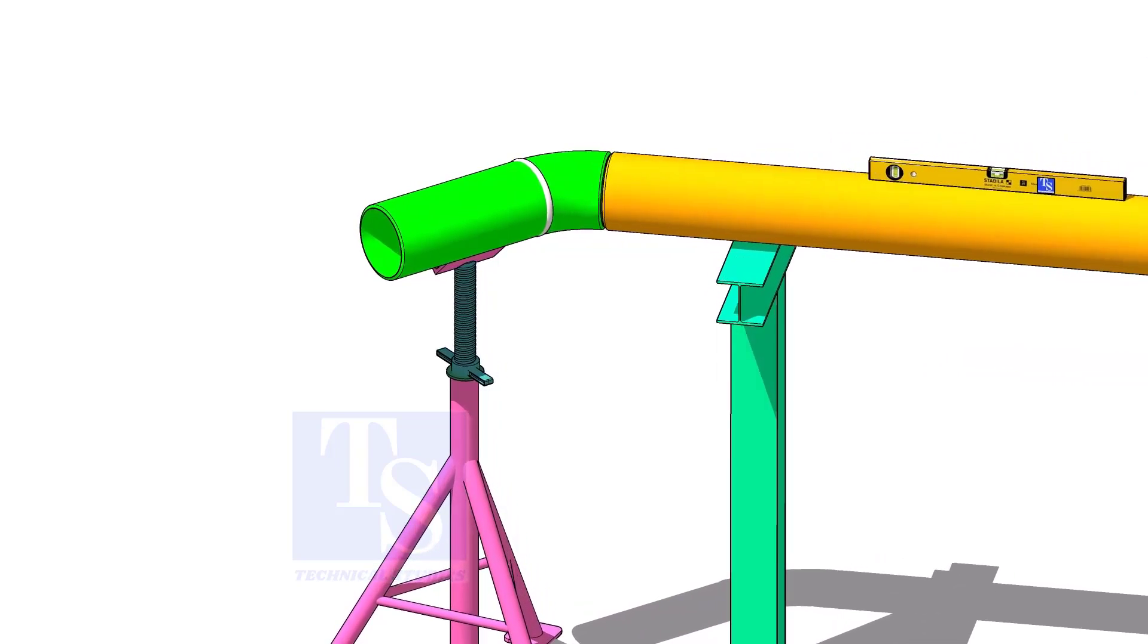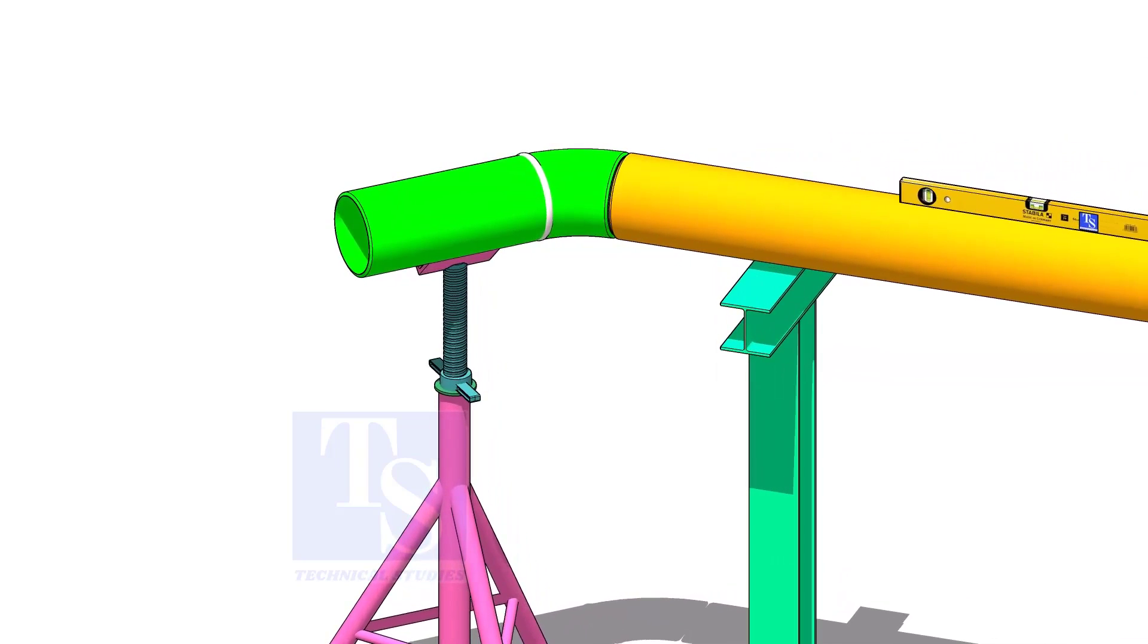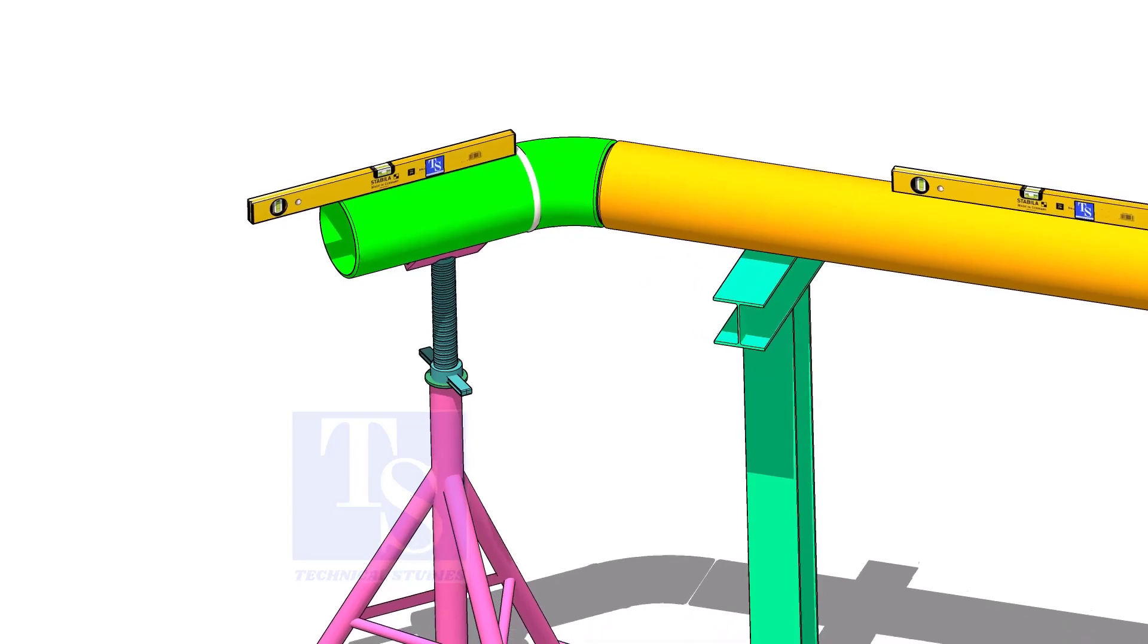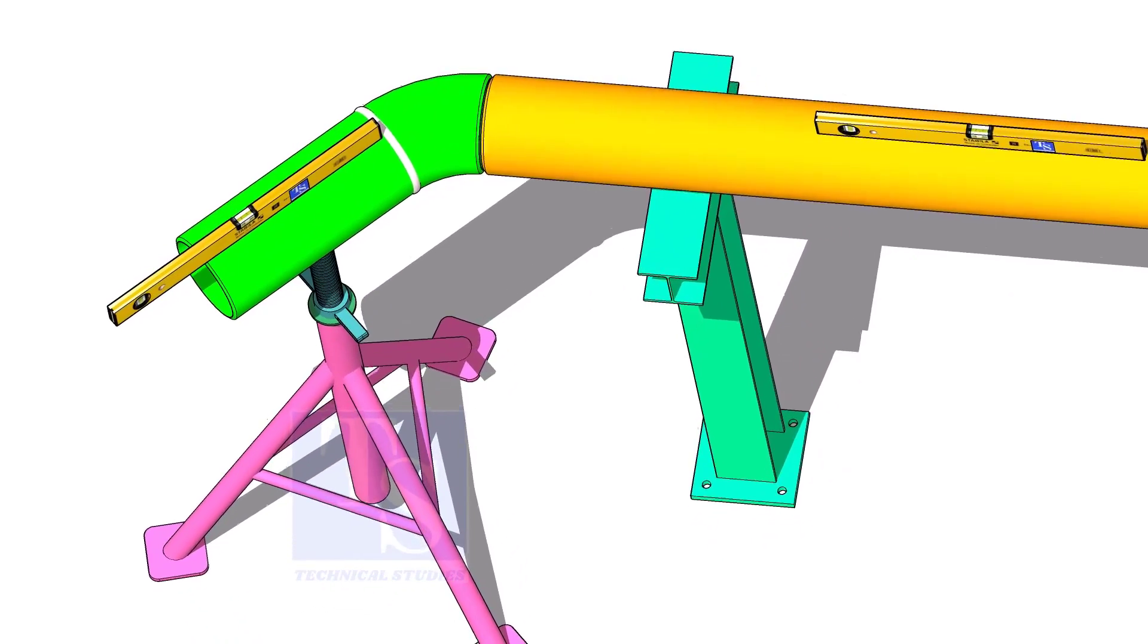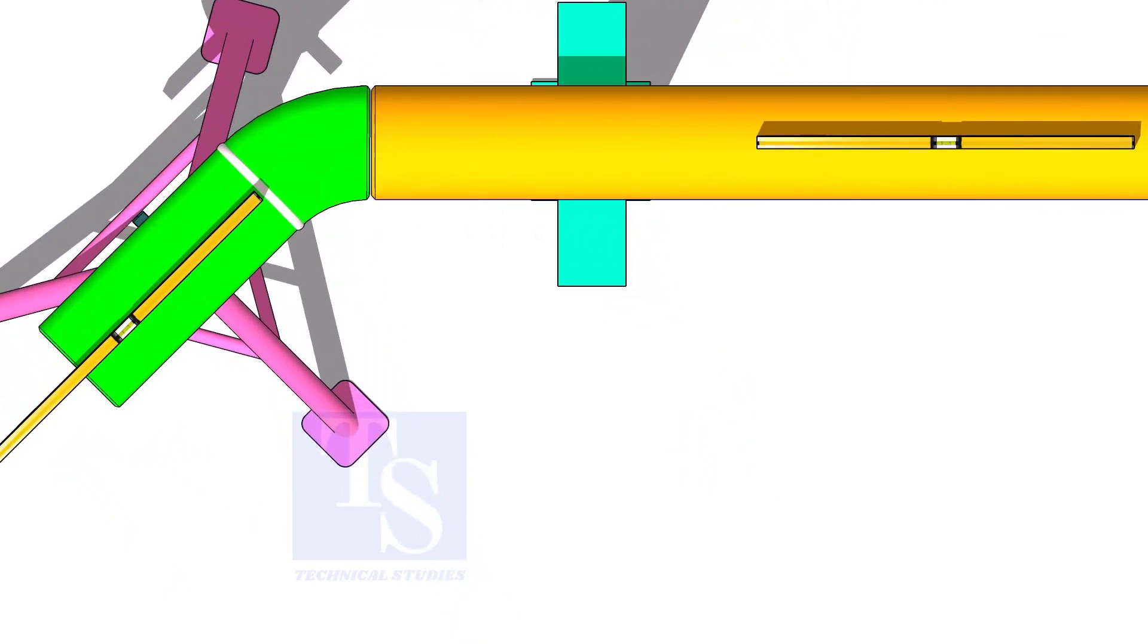Put spool number 4 in its location, not vertically but in a horizontal position. Correct the overlap and the gap, and tack weld at the top and bottom side of the joint.